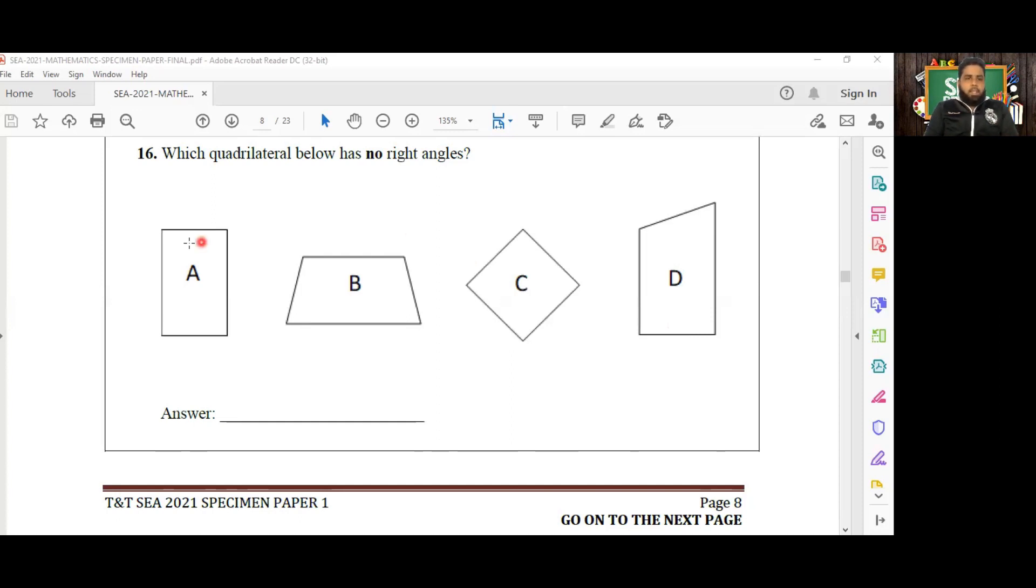So the first one is a rectangle that has one, two, three, four right angles or 90 degree angles. Then we have figure B which is a trapezium that has actually no right angles. The trapezium has no right angles.